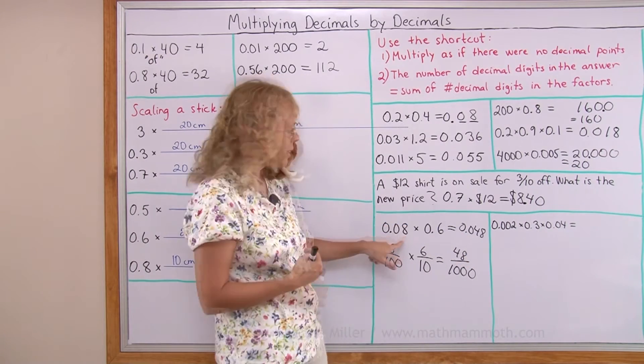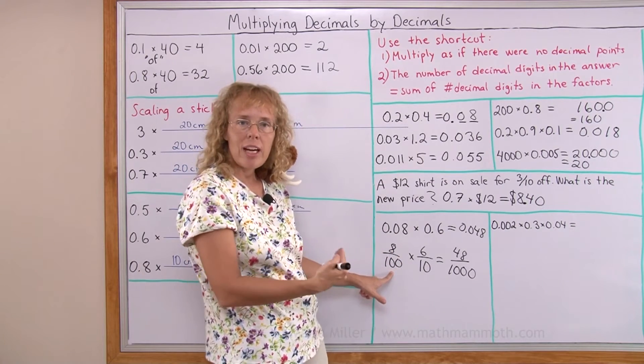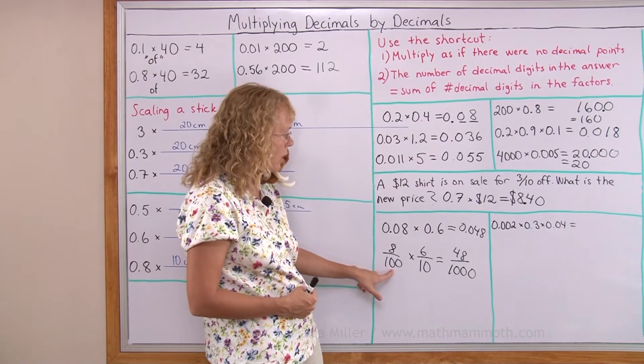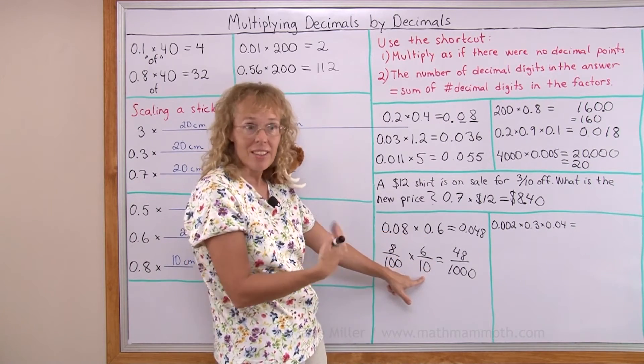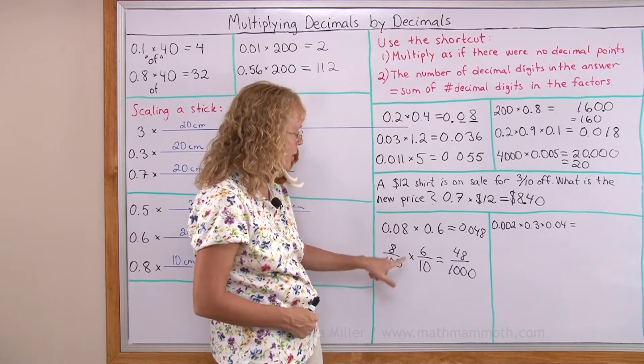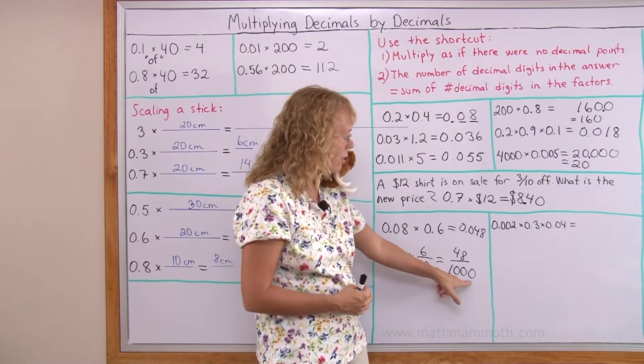You see, however many decimal digits you have here, then your denominator for your fraction will have that many zeros. If there's one decimal, the denominator is ten, because it's tenths. Two decimals means hundredths, two zeros. Three decimals would mean three zeros or thousandths.